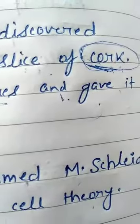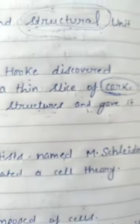Now we talk about the discovery — who discovered the cell? In 1665, Robert Hooke, a scientist, discovered the cell. While observing a thin slice of the cork — cork is the wooden part of the plant — Robert Hooke discovered cells while observing a thin slice of the cork.